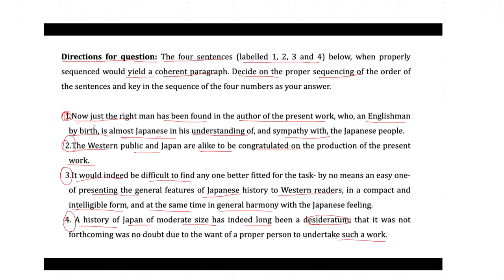We do have some difficult terms like 'desideratum.' Now let's see how we are supposed to solve this. Sentence one is about an Englishman — specifically, the author talks about the right man who is an Englishman by birth. Sentence two mentions the western public and Japan alike to be congratulated on the production of the present work.